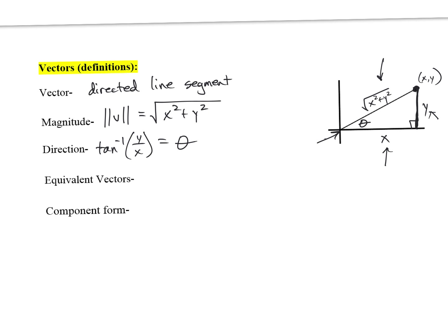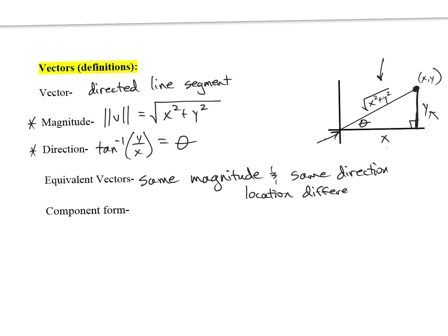Equivalent vectors are just like they sound — they have the same magnitude and the same direction. But what makes them different from each other? Their location is different; they have different starting points. For instance, I could have one vector here and another one with the same magnitude and same direction somewhere else — those are equivalent vectors.